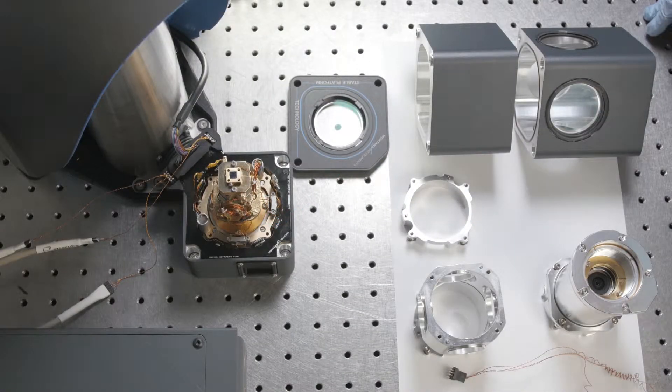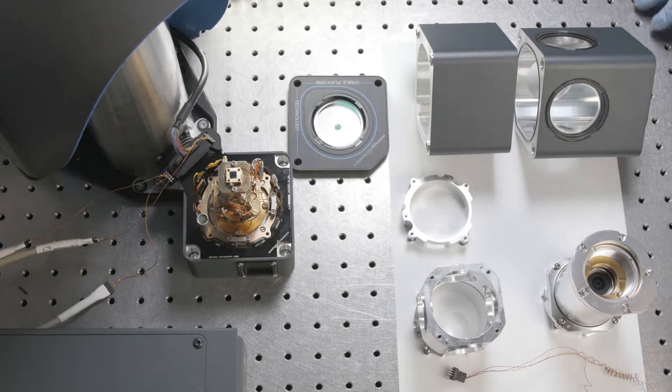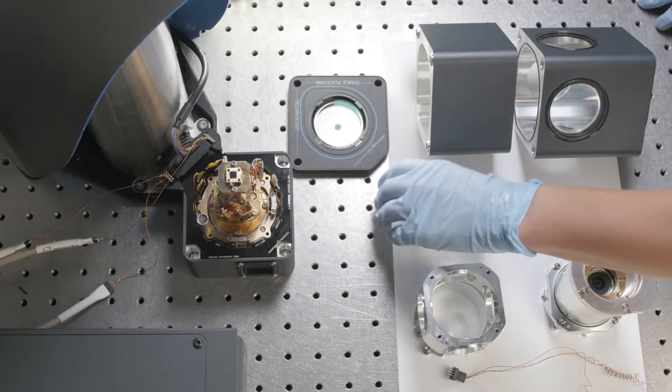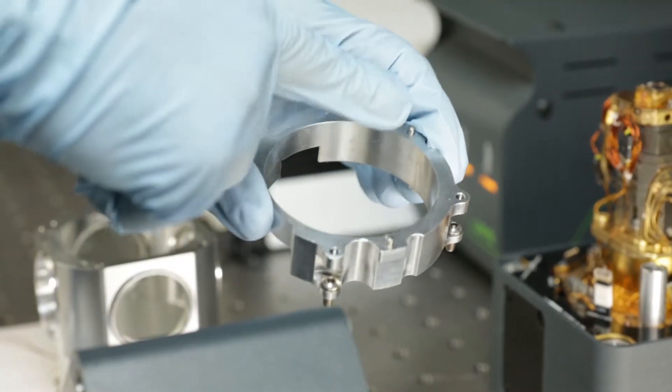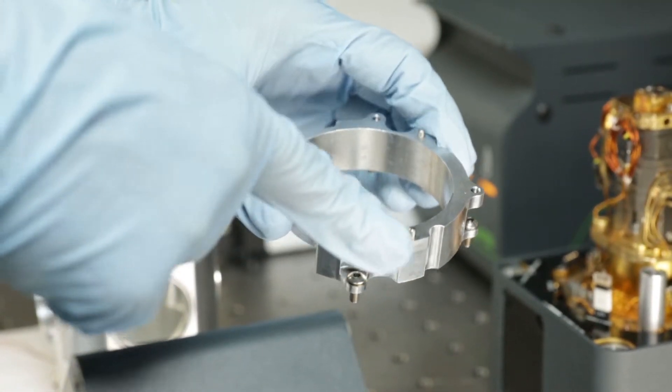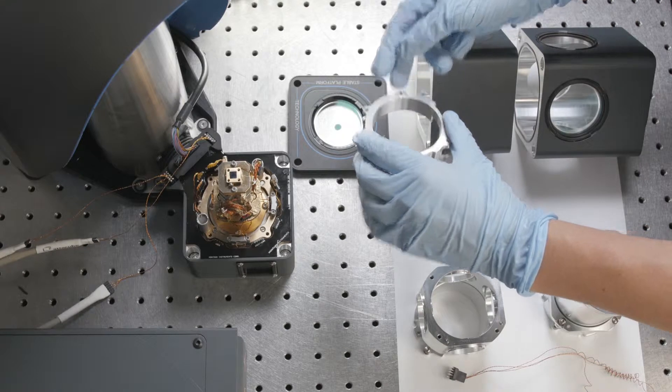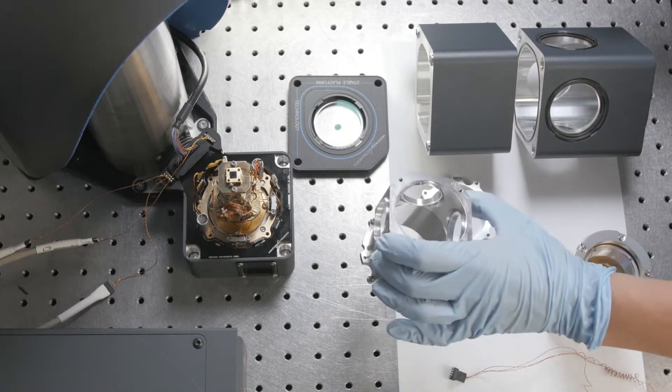Now I'm going to assemble the cryo-optic into the sample space. I'll start with the base radiation shield, which has pins so when you put it back on it'll stay aligned each time.